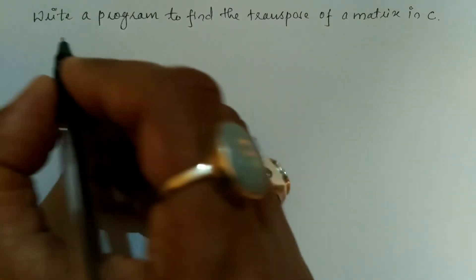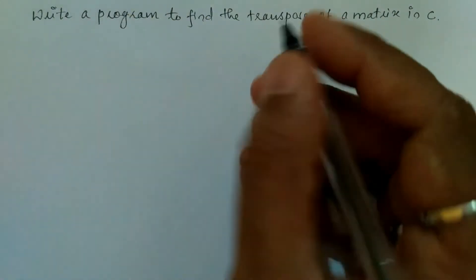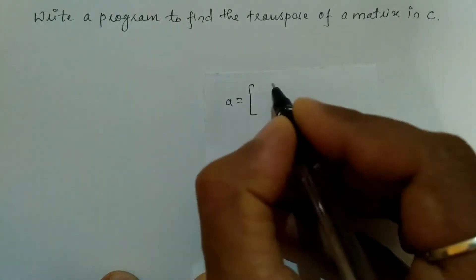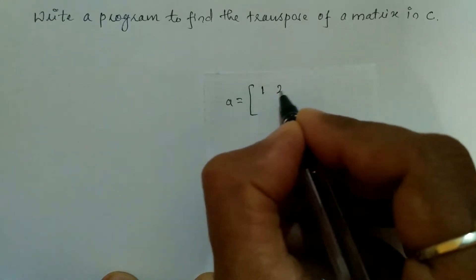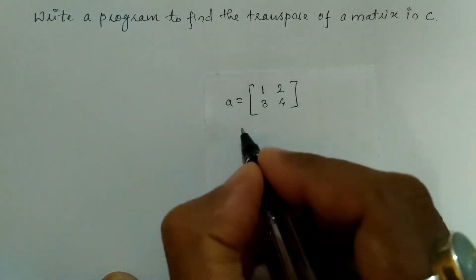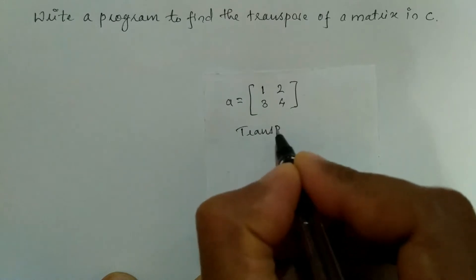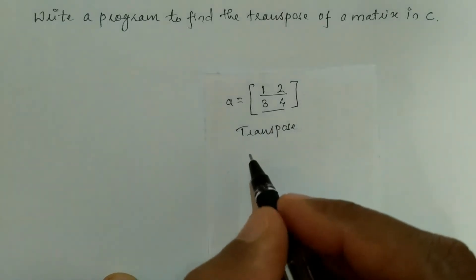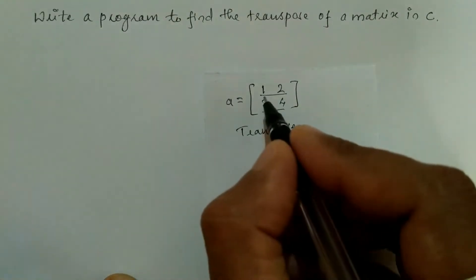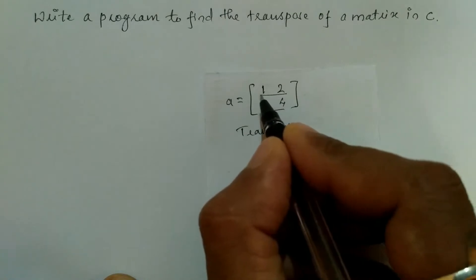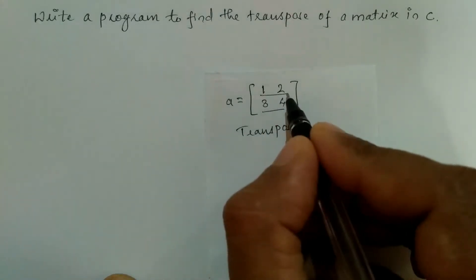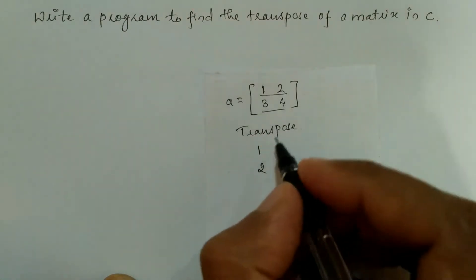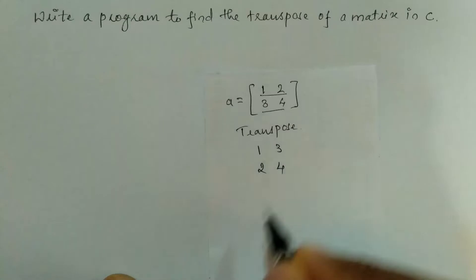Let us understand what we mean by transpose of a matrix. For example, I'm going to write matrix A with four elements: 1, 2, 3, 4. Transpose means the rows will get converted into columns and columns will get converted into rows. The first row consisting of elements 1 and 2 will be converted into the first column, and the second row will get converted into the second column.